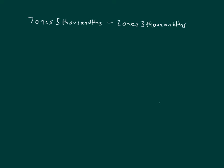Let's work on our next problem. 7 ones, 5 thousandths minus 2 ones, 3 thousandths. We'll use a place value chart to help us figure out this answer.